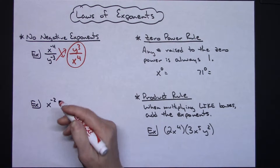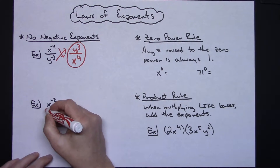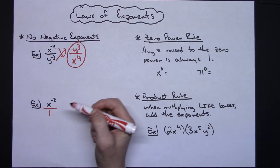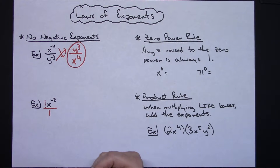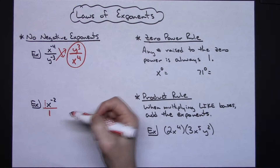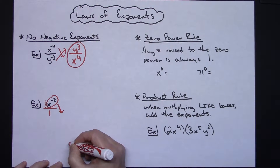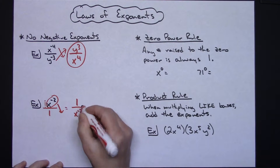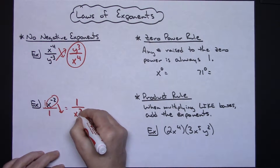Now if you look at something like x to the negative 2, the whole numerator/denominator thing isn't as easy to see. If you think of it as x to the negative 2 over 1, then there's your fraction — this is your numerator, this is your denominator — and there is also an imaginary coefficient of 1 sitting in the top. Our rule says move it to the opposite location and make it positive. You move the base and the exponent, but you don't move that coefficient. So x to the negative 2 moves to the bottom, the imaginary 1 stays in the numerator, and it becomes x to the positive 2.